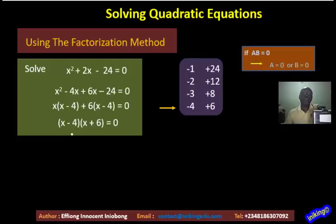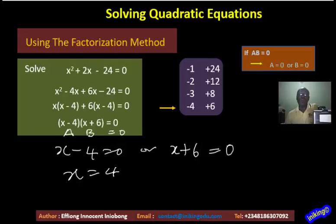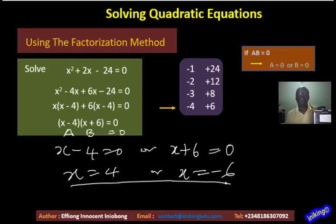I open the bracket, bring in x and plus 6, equals 0. We have two numbers multiplying to give 0, so one must be 0. Either x minus 4 equals 0, giving x equals 4, or x plus 6 equals 0, giving x equals minus 6. Those are the solutions to x squared plus 2x minus 24: x equals 4 or x equals minus 6.